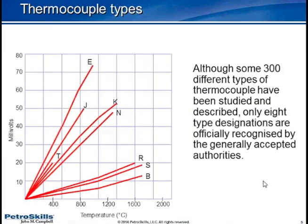A whole range of different thermocouples are available. Some 300 different types have been studied, but we really recognize only eight designations: T, J, E, K, N, and R, S, B. The R, S, and B, for high temperatures, are all based on platinum—known as noble metal thermocouples. The E, J, T, and K are based on different materials.